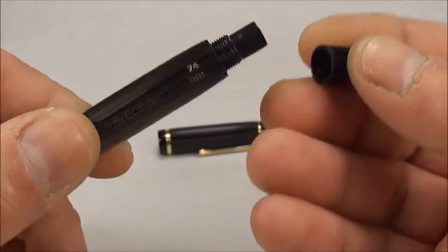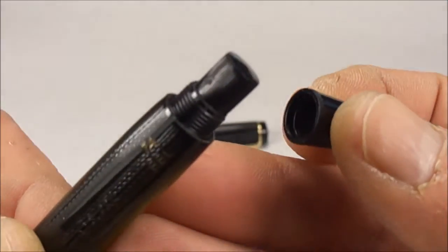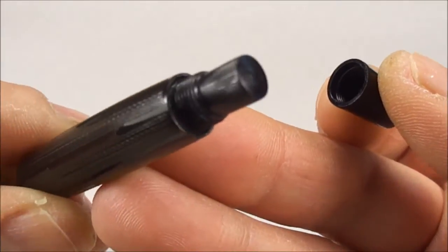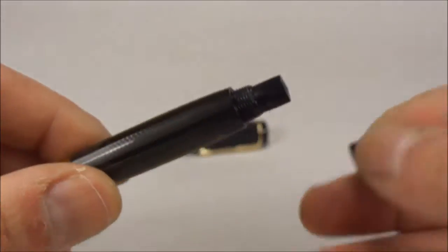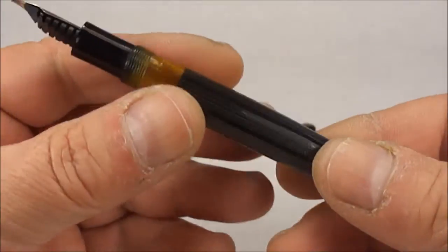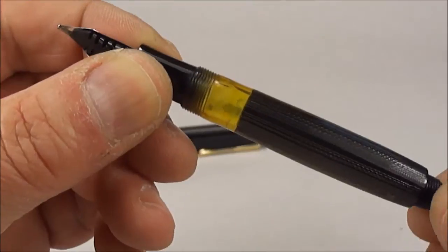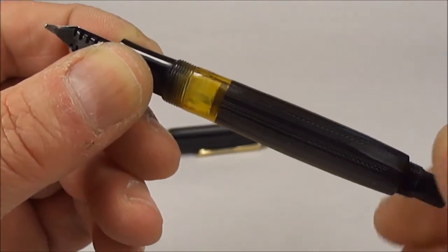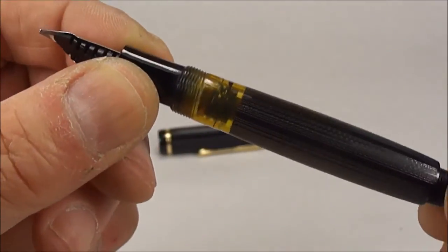This one is a piston filler which means what we do is simply unscrew the blind cap like so and again you can see the sort of the turning knob to the bottom there. And what we do is by simply turning it hopefully you'll be able to see the piston move in the ink view there. You can see the piston moving up and down inside there.